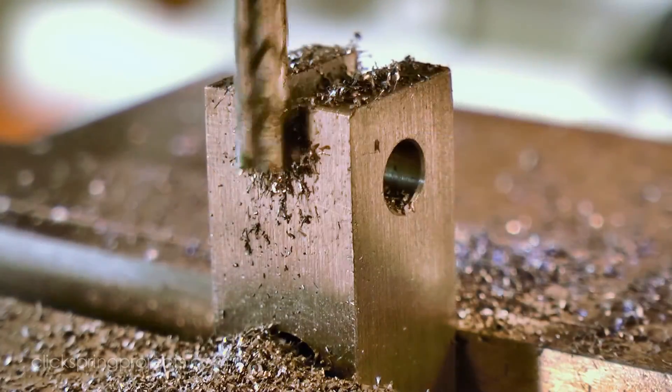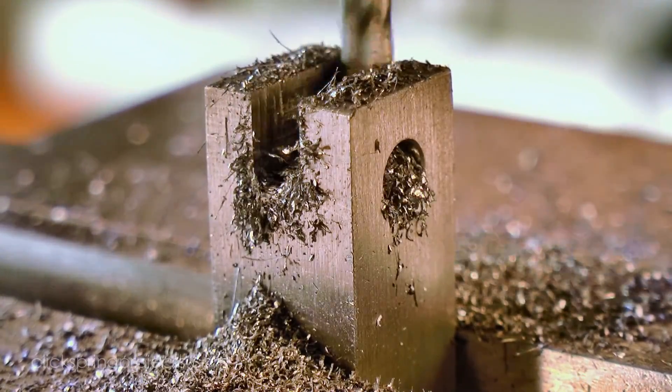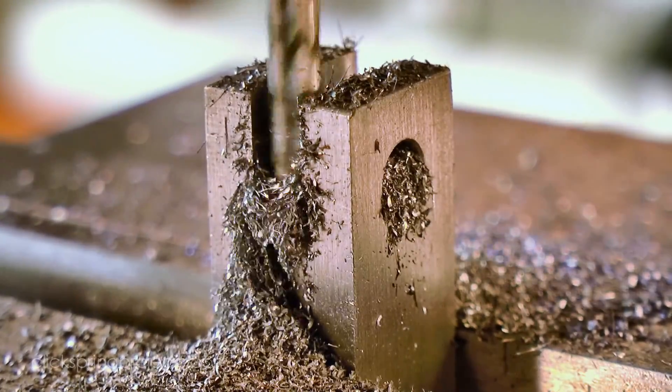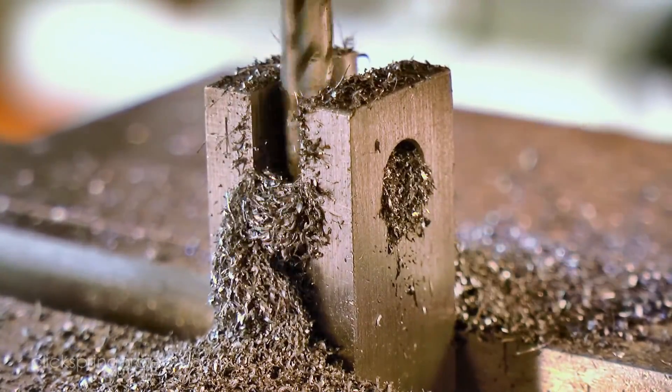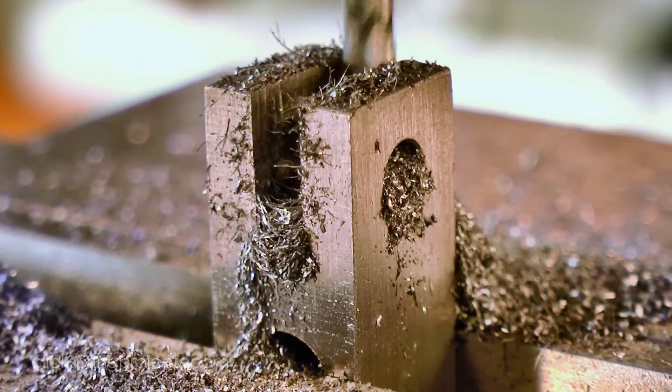Next I used an end mill to carefully mill out the sections that will receive the jaws. Now the end mill is sticking out only as far as it needs to be to reach down to the bottom of the channel, but it's a very slender cutting tool, and at great risk of breaking off and ruining the part, so I'm keeping the cuts modest, and the feed rate slow.